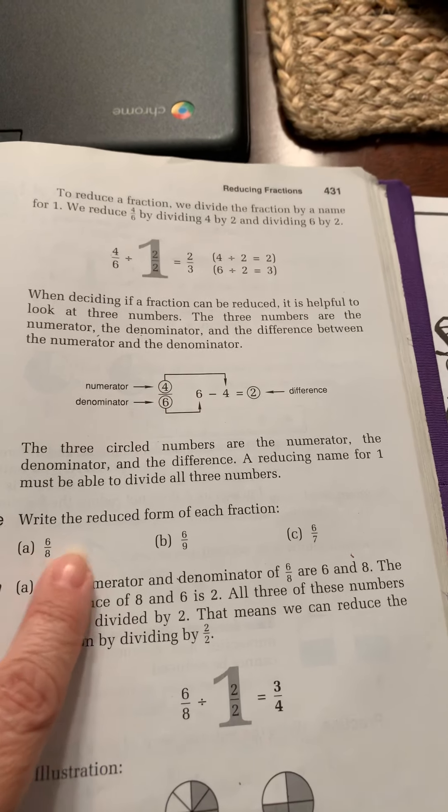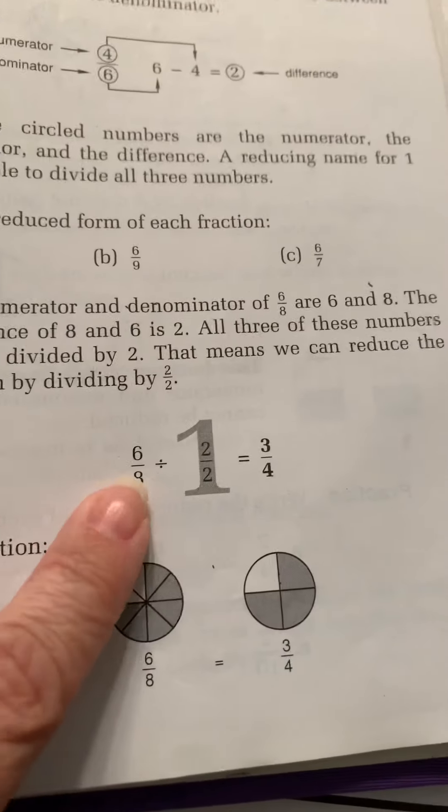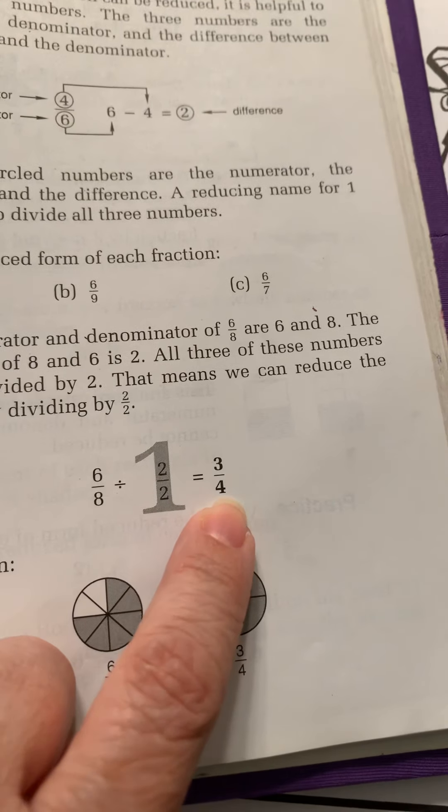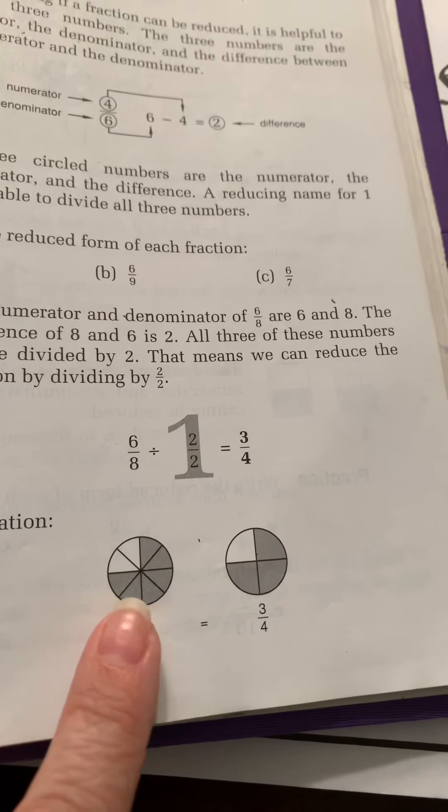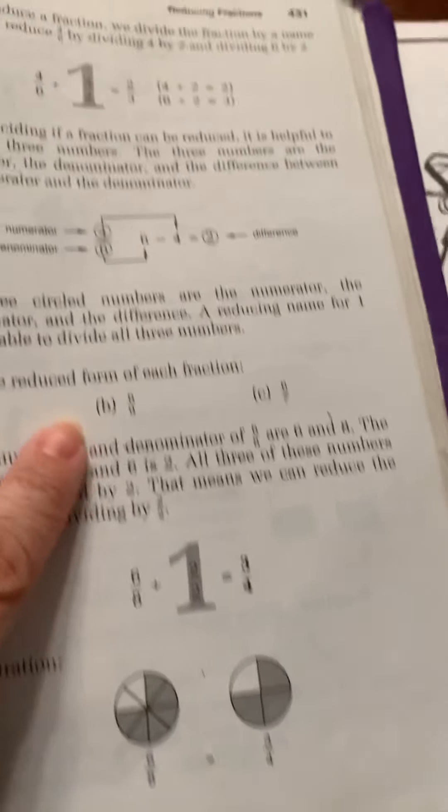So six divided by two is three. Eight divided by two is four. And then it shows the picture here. Six-eighths divided by two halves equals three-fourths. And then they show you the picture to show that they're still equal.